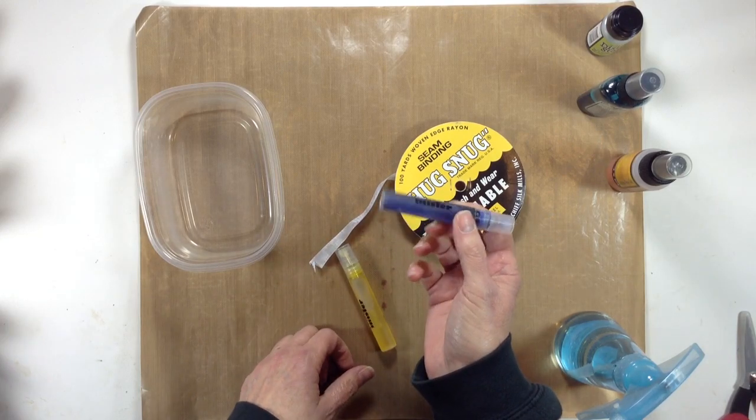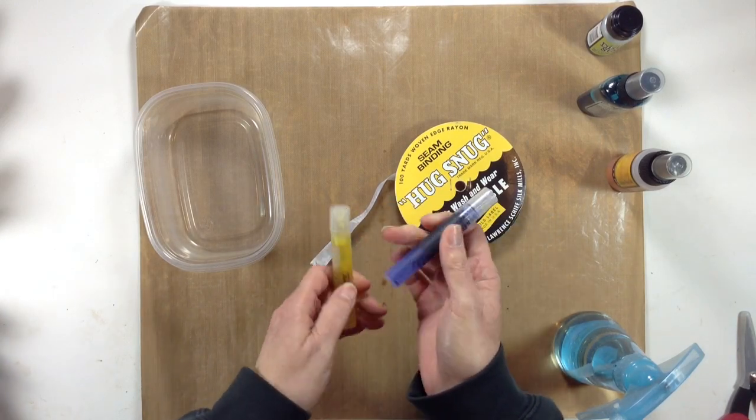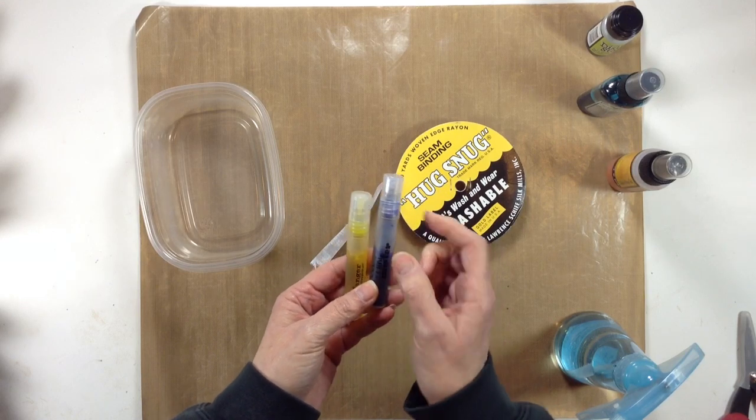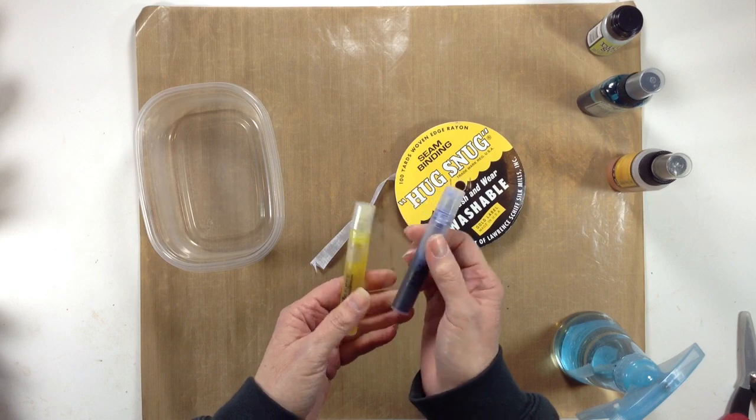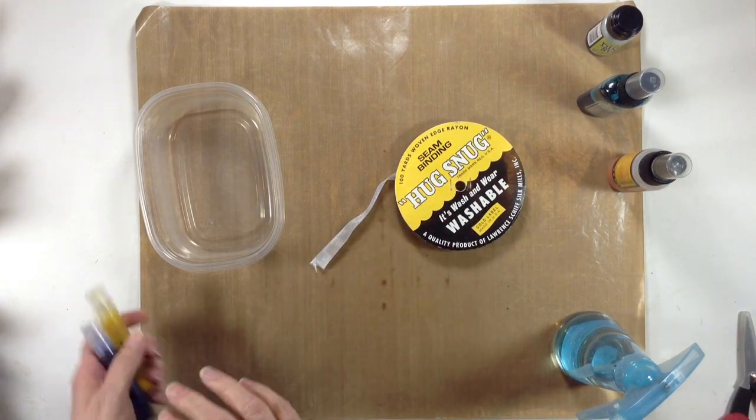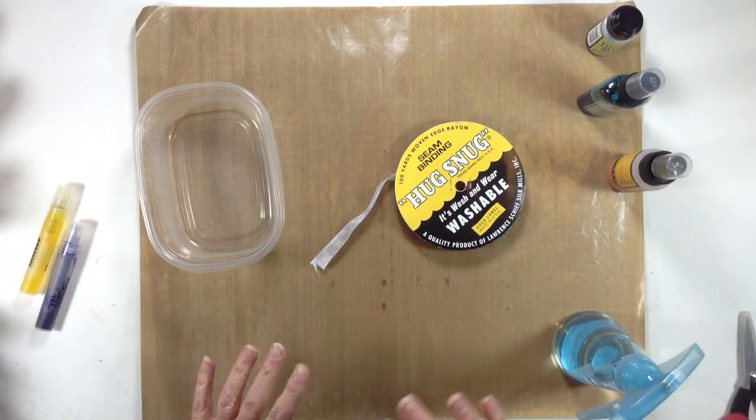This one in here is the Lemonade from Tim Holtz. With the reinker, I put some drops and filled it up with water. And this is the lavender, I think. It was their summer seasonal one. These were the reinkers and I just put a few drops of their ink in the mister and then added water to it. You can make your own mist if you don't have any of the other things.